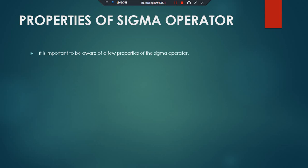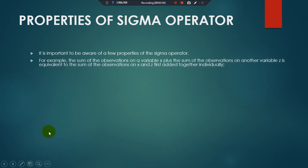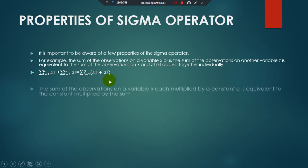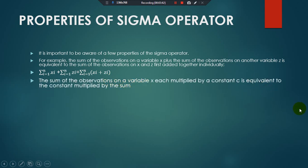Now, properties of the sigma operator. First, the sum of observations on variable x plus the sum of observations on variable z is equivalent to the sum of observations on x and z added together individually. That is: sigma x_i plus sigma z_i equals sigma (x_i + z_i), where i runs from one to n. Second, the sum of observations on variable x each multiplied by a constant c is equivalent to the constant multiplied by the sum.